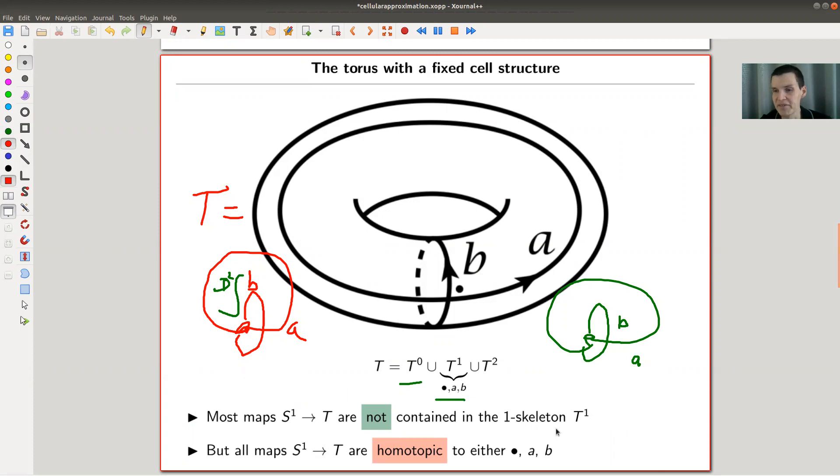And the observation now is it's very easy, and we've all seen that before, and it's very strange that this actually generalizes in an absolutely beautiful way. So the observation is that most maps from S^1 into T are certainly not contained in the one skeleton.